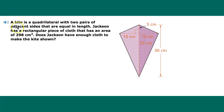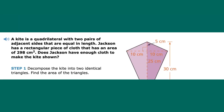Here's another example. We know a kite is a quadrilateral with two pairs of adjacent sides equal in length. Jackson has a rectangular piece of cloth with an area of 298 square centimeters. Does Jackson have enough cloth to make this kite? I'll give you a little time to solve the problem. Step one: decompose the kite into two identical triangles and find the area of one triangle.